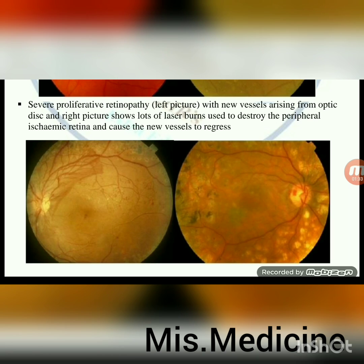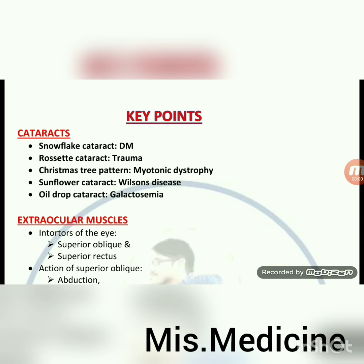Key points on cataracts: snowflake cataract — diabetes mellitus; rosette cataract — trauma; Christmas tree pattern — myotonic dystrophy; sunflower cataract — Wilson's disease; oil-drop cataract — galactosemia.